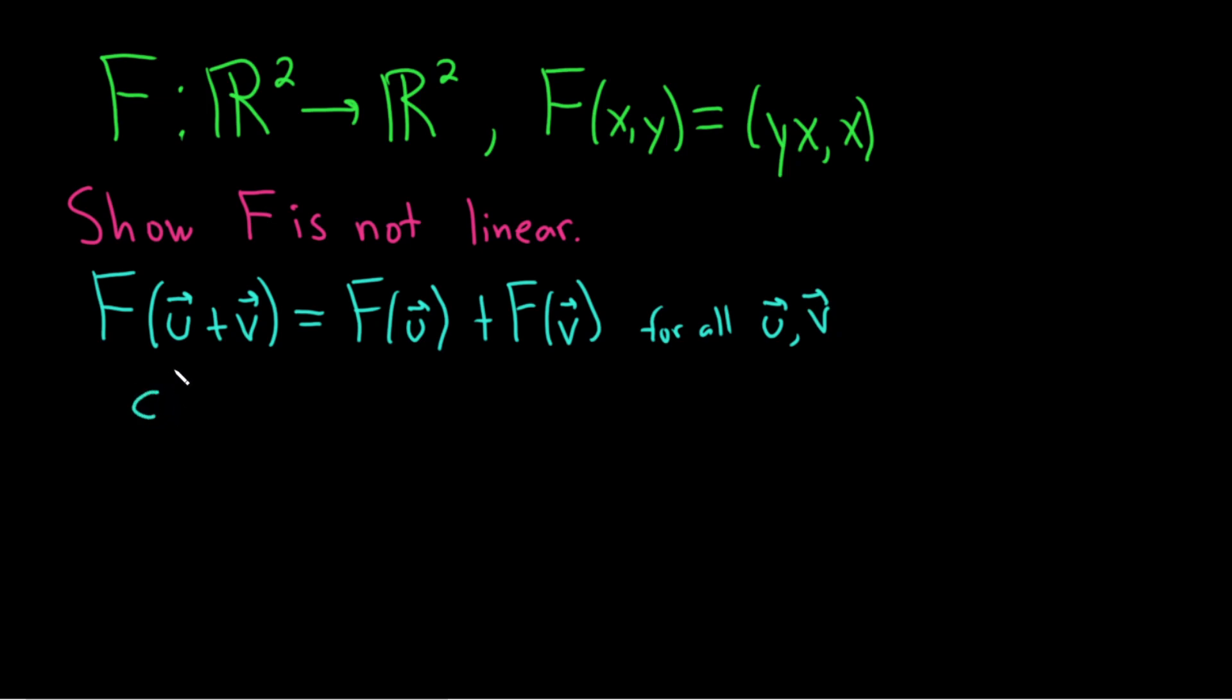And also, you have to have this other condition where c times F of your vector u is equal to F of the scalar c times the vector u. And this is for all scalar c, so for all c and vectors u. And c here would be a scalar, so this is a scalar, usually a real number or a complex number. So to show it's not linear, this is what it means to be linear.